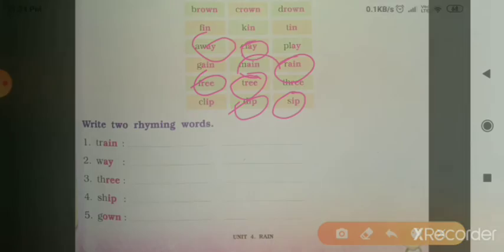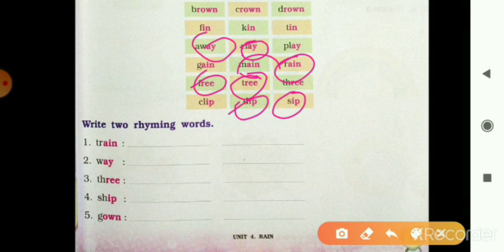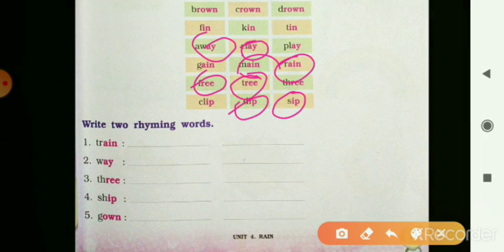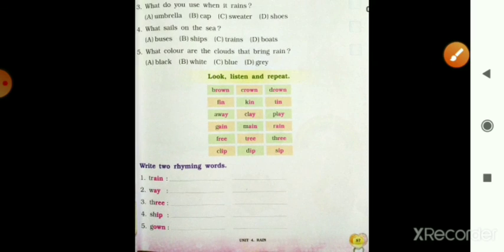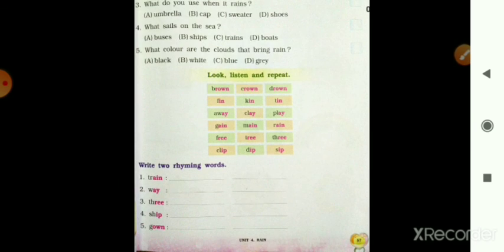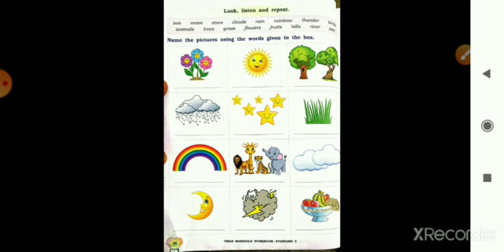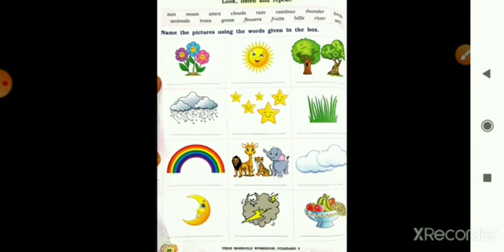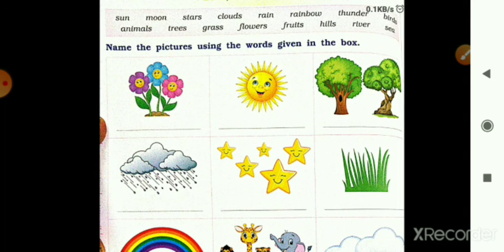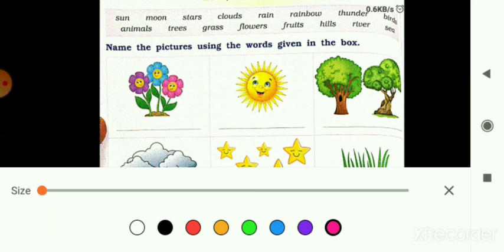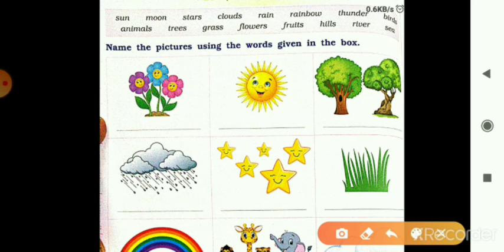Then you can read in the last day around. Then you can read round. What do you have to do? Name the pictures using the words given in the box. Box me kuch words diye hain, you have to choose the word and then write the name there.